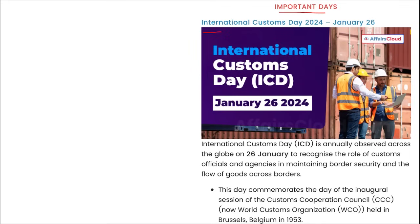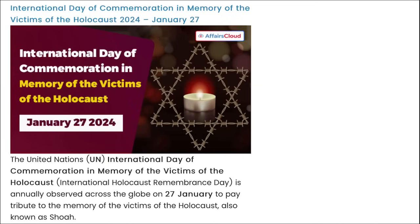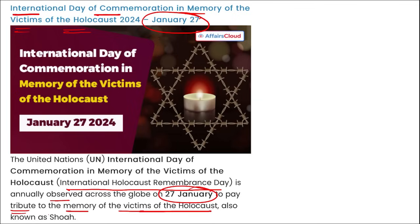Important days: International Customs Day was observed on 26th of January to recognize the role of customs officials and agencies in maintaining border security and the flow of goods across borders. International Day of Commemoration in Memory of Victims of the Holocaust was observed on 27th of January, also known as Shaw (Shoah), to pay tribute to victims of the Holocaust.